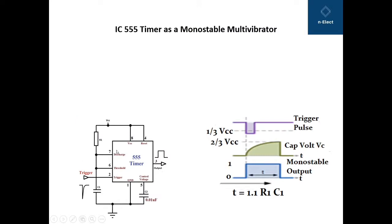Here we are seeing the diagram of IC555, with externally connected resistor and capacitor. A trigger input — a negative going pulse — is provided at the trigger input, that is pin number 2. Output is taken at pin number 3, which is Q-bar output of the RS flip-flop block, as can be clear from the block diagram of IC555. On the right-hand side, we are seeing the waveforms: the negative going trigger pulse, the comparator charging action, and the monostable output voltage across pin number 3.